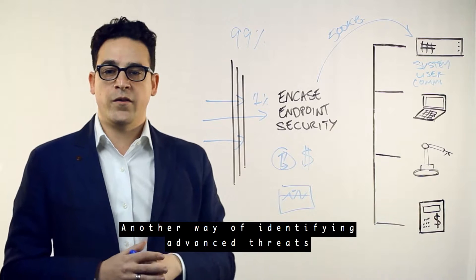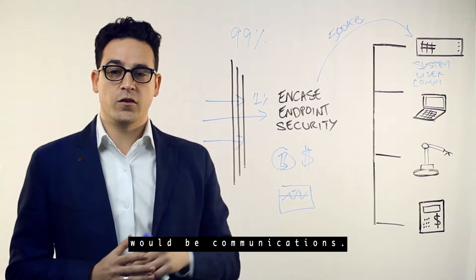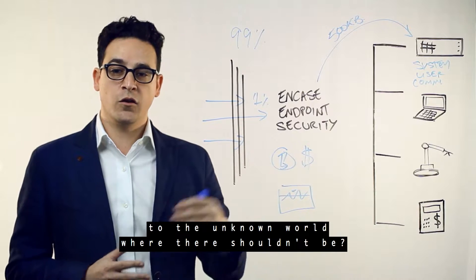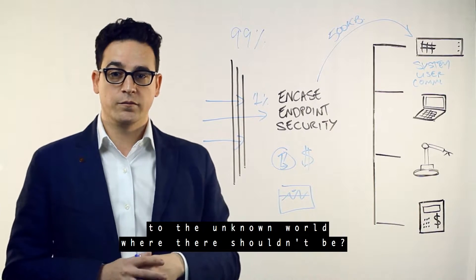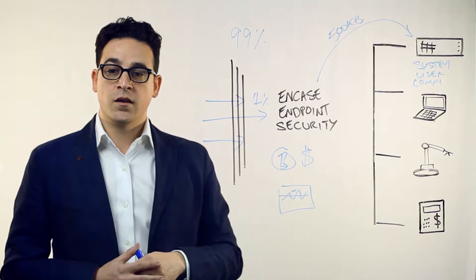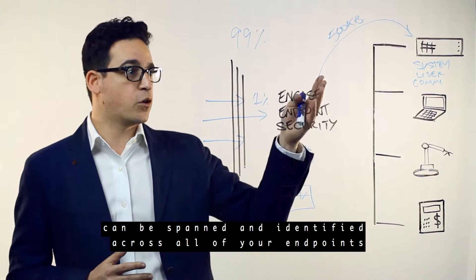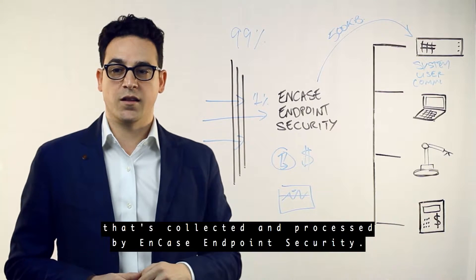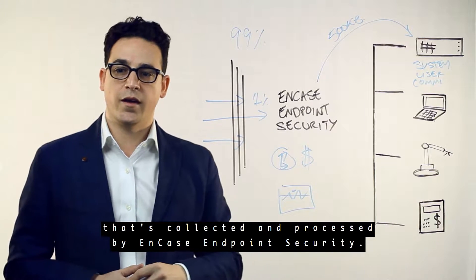Another way of identifying advanced threats would be communications. Do you have a Windows process communicating out to the unknown world when it shouldn't be? Those simple methodologies, policies, and behavioral analysis can be spanned and identified across all of your endpoints using that single 500 kilobytes worth of data that's collected and processed by NCASE endpoint security.